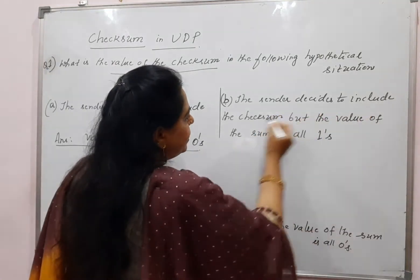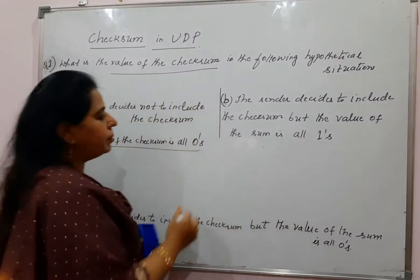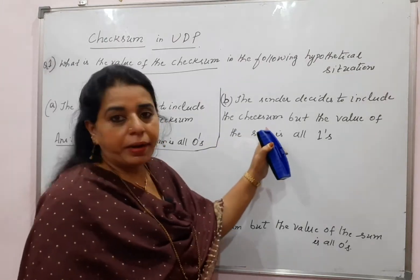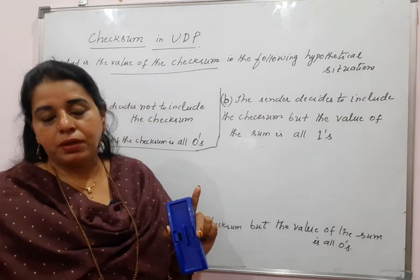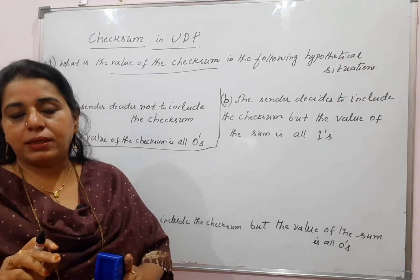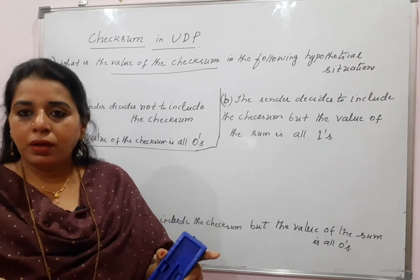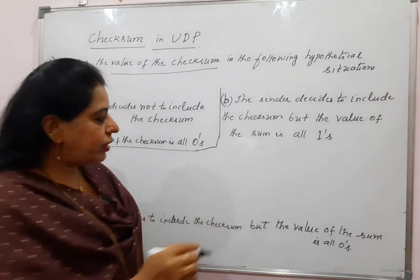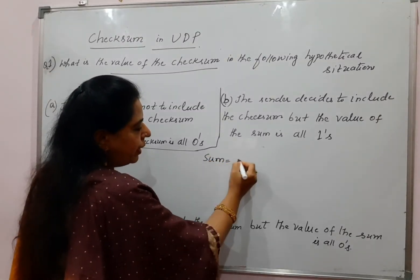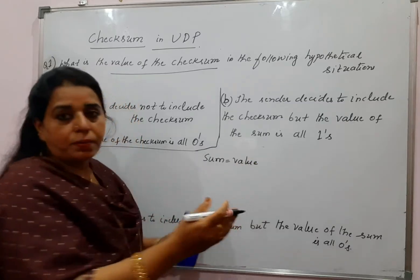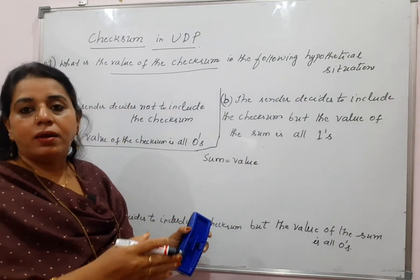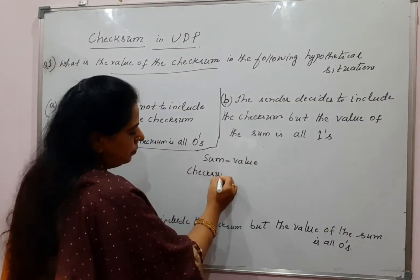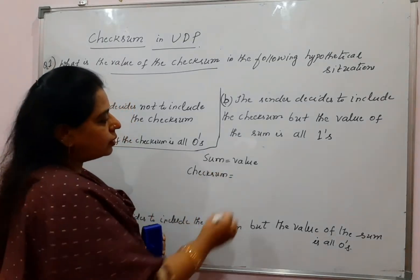The second situation is: the sender decides to include the checksum, but the value of the sum is all ones. The sender is interested in including the checksum, so there should be some value in the checksum field. You have to remember that when you add up all the fields of the header, pseudo header, and the data, you get a certain value. The complement of that sum is the checksum.